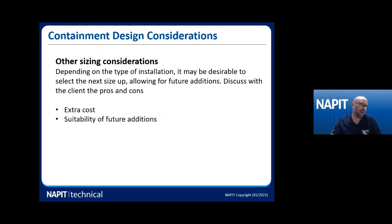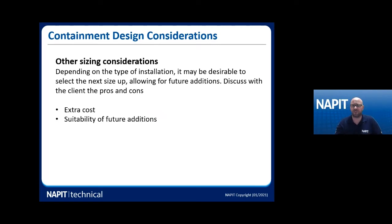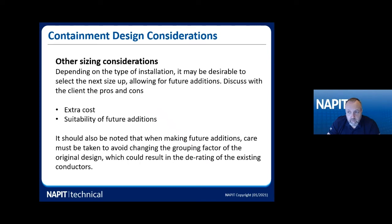We also need to consider other things in our design. Depending on the type of installation, it may be desirable to select the next size up to allow for future additions, and you really need to discuss the pros and cons with the client. For example, the client might say they're building a workshop now with a certain number of machines, but they're expecting to expand later in the year. You need to have that conversation — if most of the current equipment is single phase but next year they plan to add three-phase induction motors, the smaller trunking and tray you've put in might not be adequate.